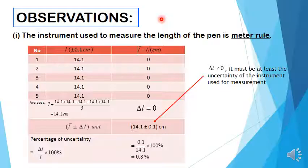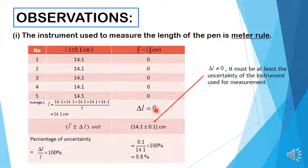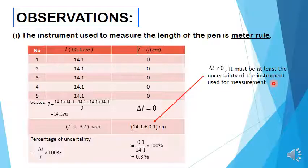Observations, Roman 1. State the instrument used to measure the length of the pen, which is the meter rule. Then calculate for the average length, which is 14.1 cm. Complete this column by calculating the modulus difference between the average length and each measurement reading recorded. Sum up these values and divide by 5 to get the uncertainty. The result is 0.0; however, delta L cannot be 0 — it must be at least the uncertainty of the instrument used. Therefore, the length of the pen recorded is 14.1 ± 0.1 cm.